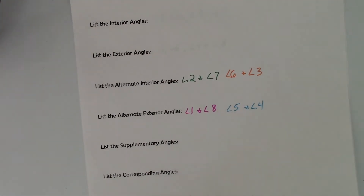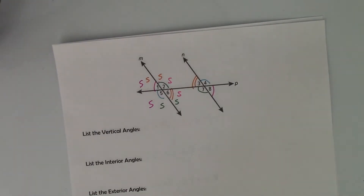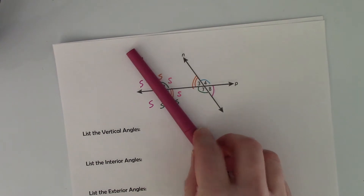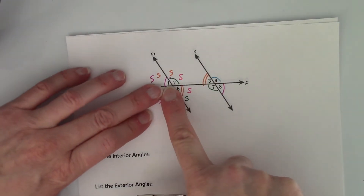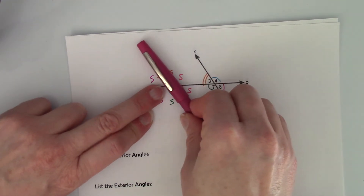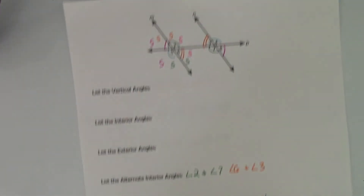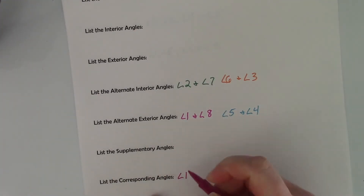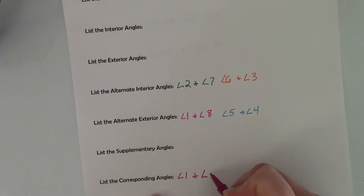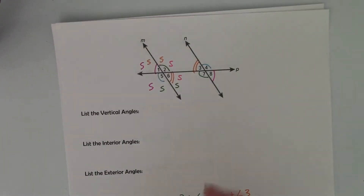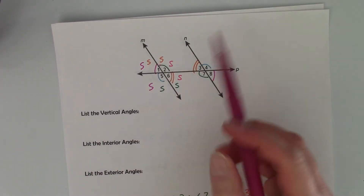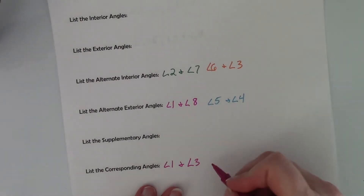Alright, last but not least, we have corresponding angles. Corresponding angles are the ones that when you slide this line over to this line, the angles match up. So angle 1 and angle 3 are in the same position — if I slide line N on top of line M, angle 3 is going to match angle 1. So angle 1 and angle 3 are corresponding angles. Angle 2 would match up with angle 4 when this line is slid over, so angle 2 and angle 4 are corresponding angles.